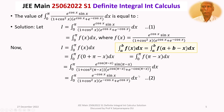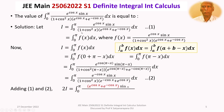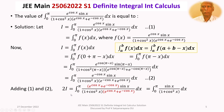We notice the denominator is the same in equations 1 and 2. Adding them, 2I equals the integral from 0 to π of (e^(cos x) + e^(−cos x)) · sin x divided by (1 + cos²x)(e^(cos x) + e^(−cos x)) dx. The factor (e^(cos x) + e^(−cos x)) appears in both numerator and denominator and cancels, giving 2I = the integral from 0 to π of sin x / (1 + cos²x) dx.